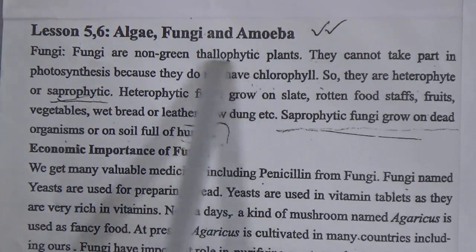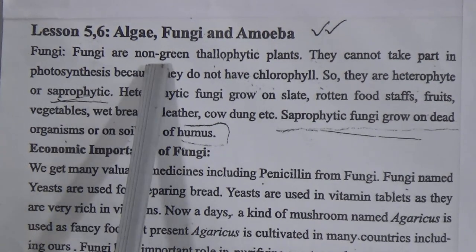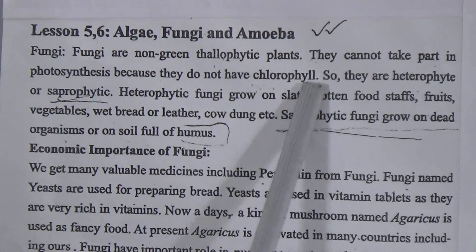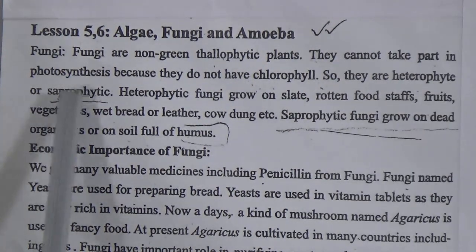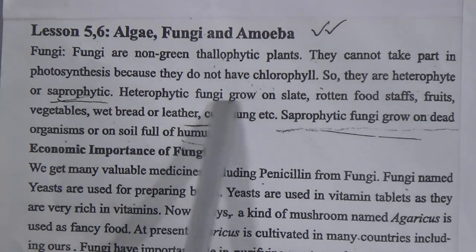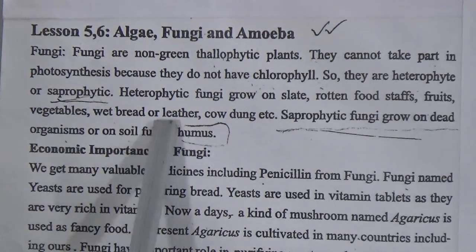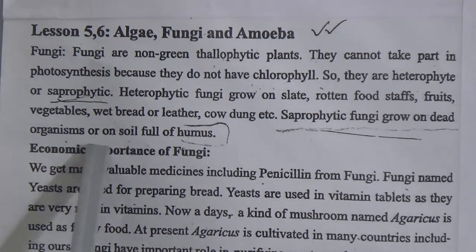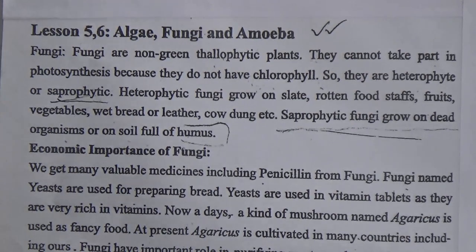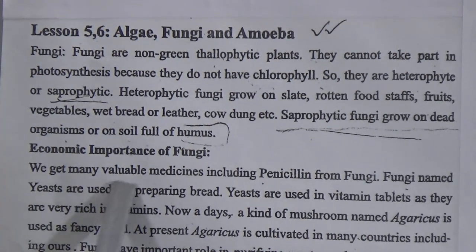Fungi cannot take part in photosynthesis because they are non-green — they do not have chlorophyll. So they are heterotrophic or saprophytic. Heterotrophic fungi grow on stale rotten foodstuffs, fruits, vegetables, wet bread, leather, cow dung, etc. Saprophytic fungi grow on dead organisms or on soil full of humus.